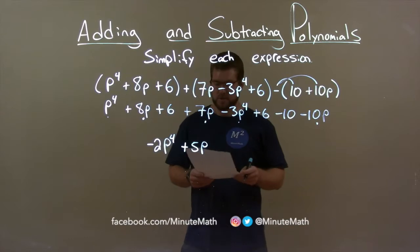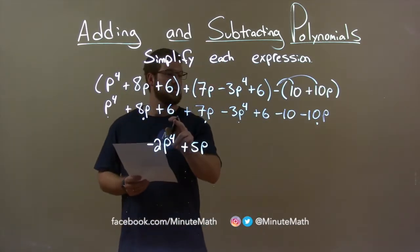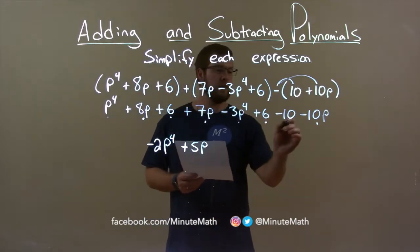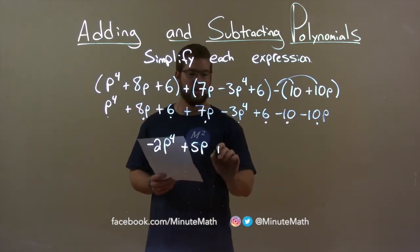Now we have just our numbers here. That's the last ones left. We have 6 plus 6 is 12, minus 10 is 2. So we have positive 2.